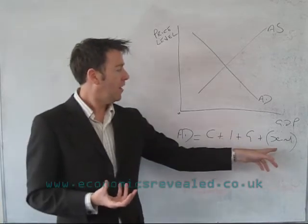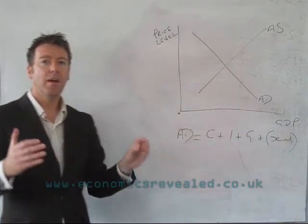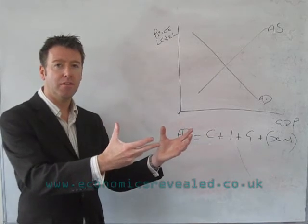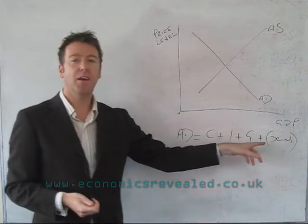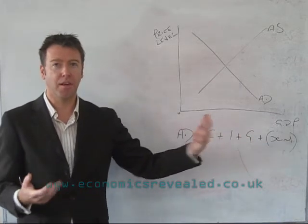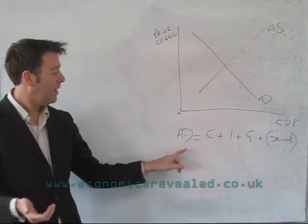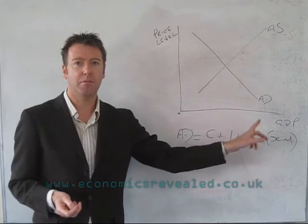And then in brackets here we've got exports minus imports. So exports are goods going abroad, but that's demand for UK products. And then imports is us demanding products from abroad, so that's the minus figure. So it's a nice simple equation: AD equals C plus I plus G plus X minus M.